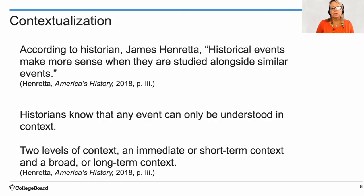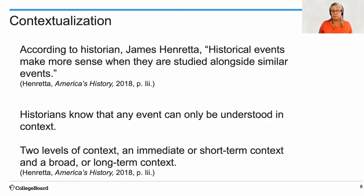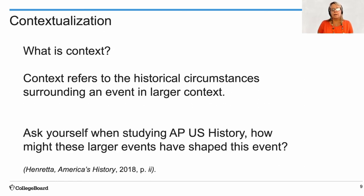According to historian James Henrata, historical events make more sense when they are situated alongside similar events. Historians know that any event can only be understood in context. There are two levels of context: an immediate and short-term context, and a broad long-term context. In Unit 1, you're going to see the same topics throughout our time together as a continuing theme of United States history. So what is context? It refers to the historical circumstances surrounding the larger event that we study in history.